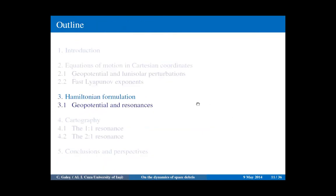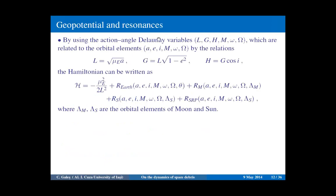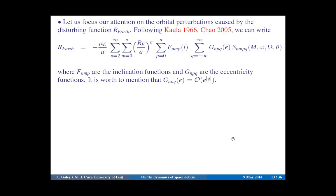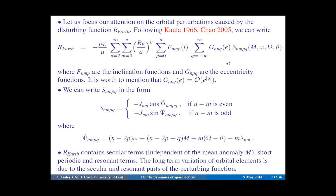Now let's see the Hamiltonian formulation. In terms of the Delaunay variables, which are related to the orbital elements by these relations, the Hamiltonian can be written in a form where we have the disturbing function due to the Earth, the Moon, Sun, and solar radiation pressure, and the canonical equations can be written accordingly. We focus our attention on the disturbing function due to the Earth, for which we use an expansion where F are the inclination functions, G are the eccentricity functions, and S are functions defined by the argument psi of the harmonics.